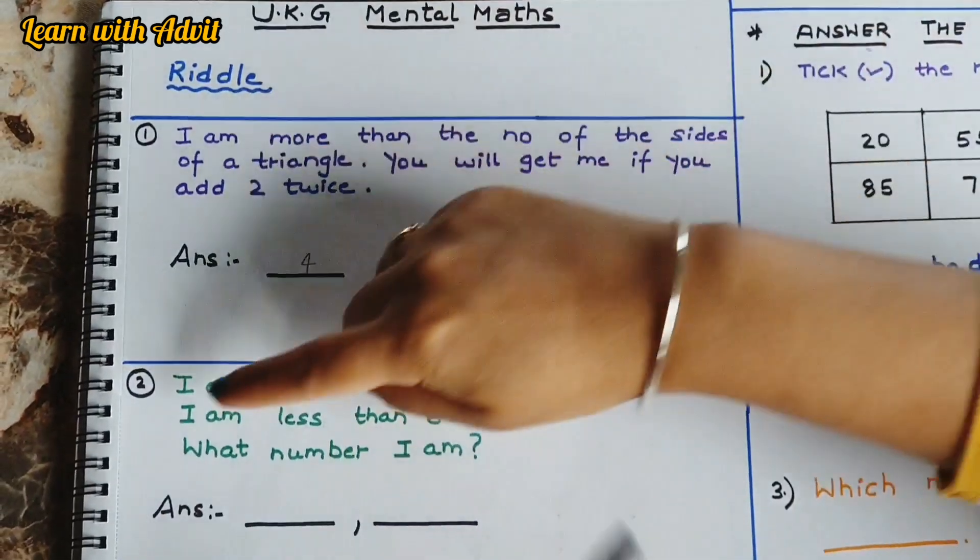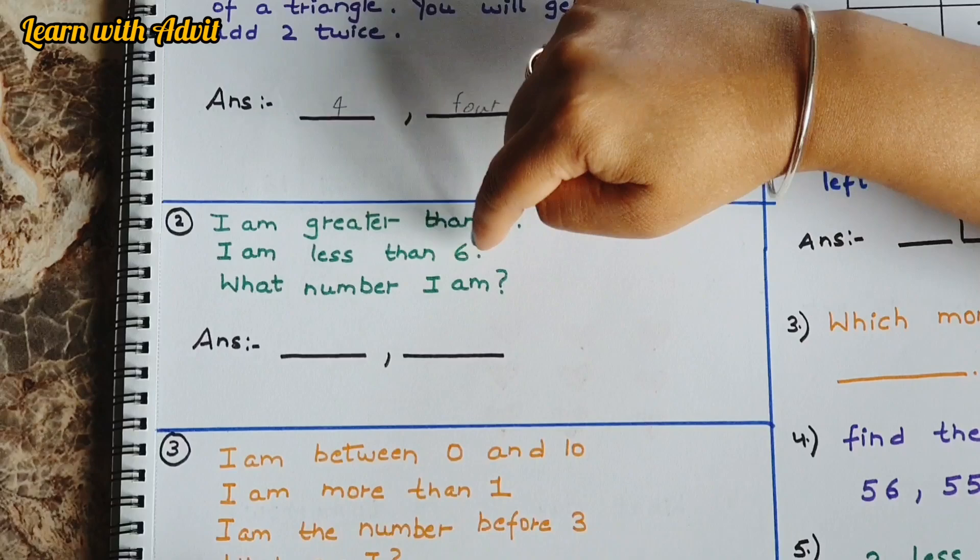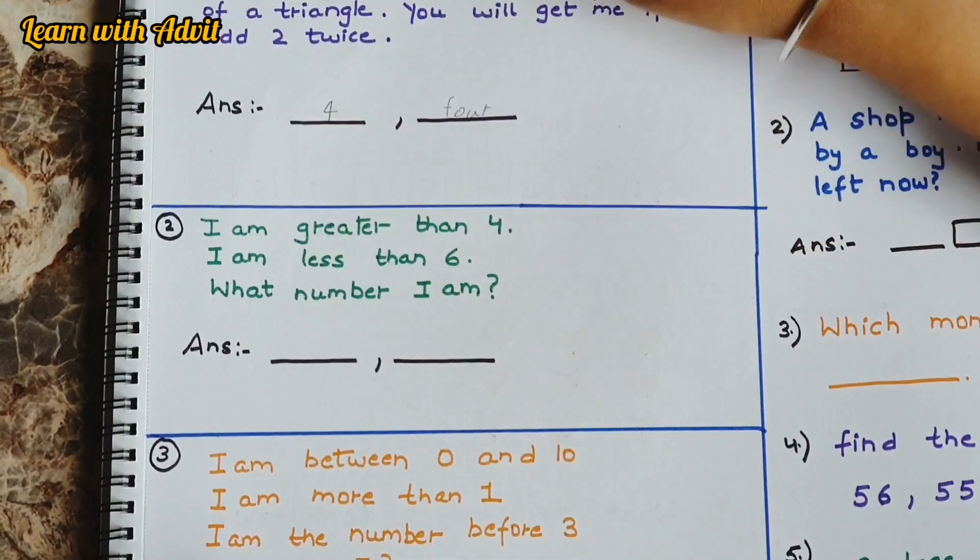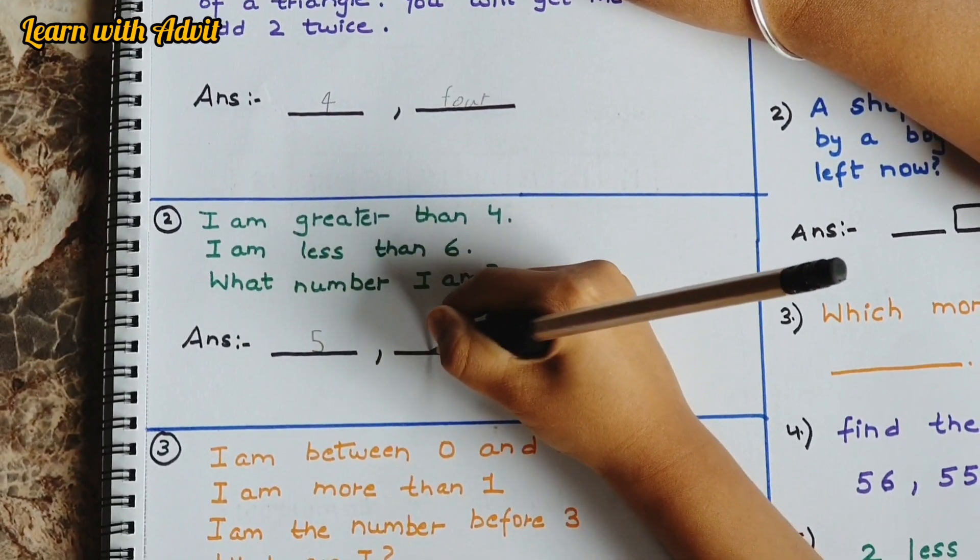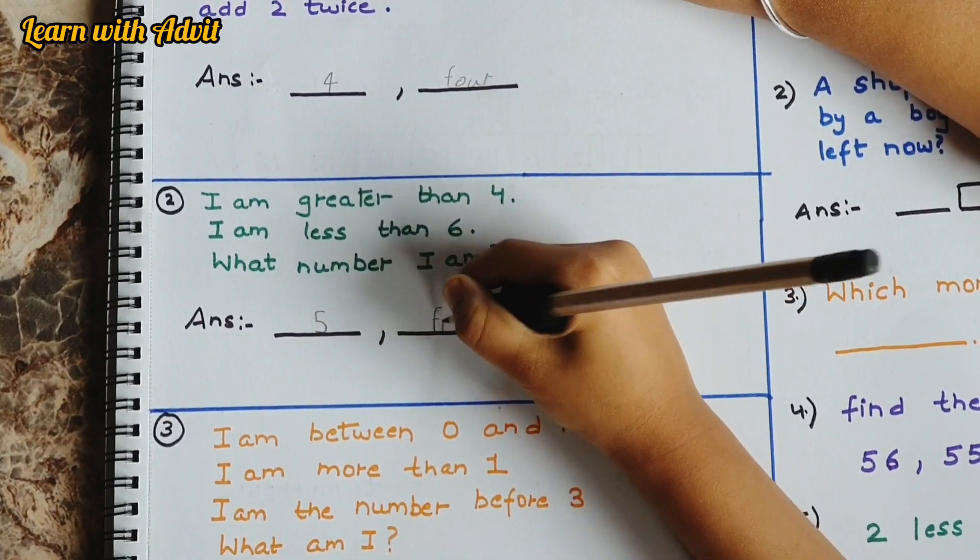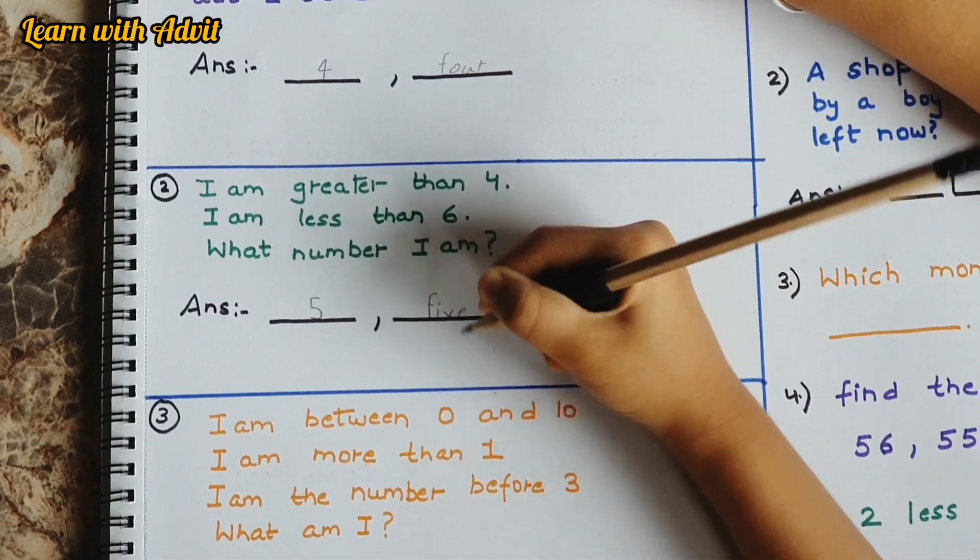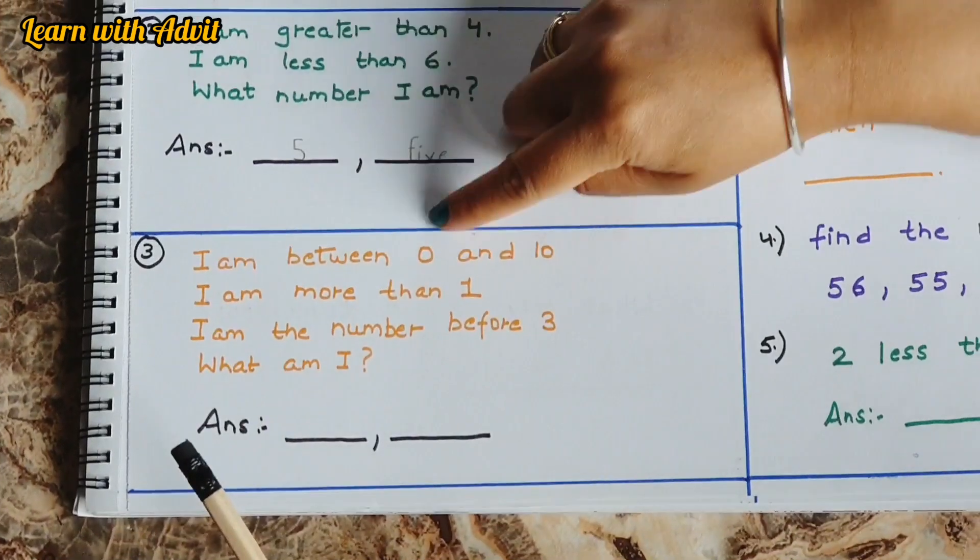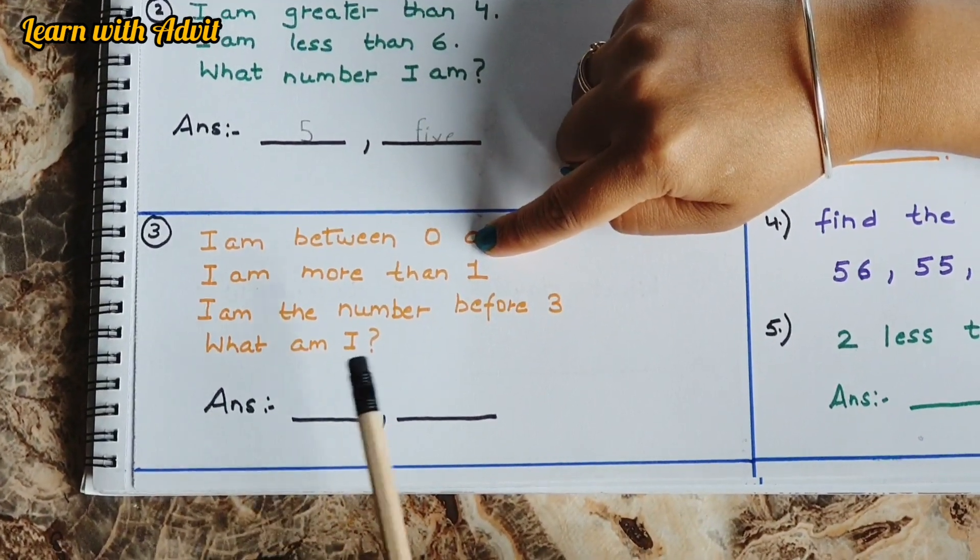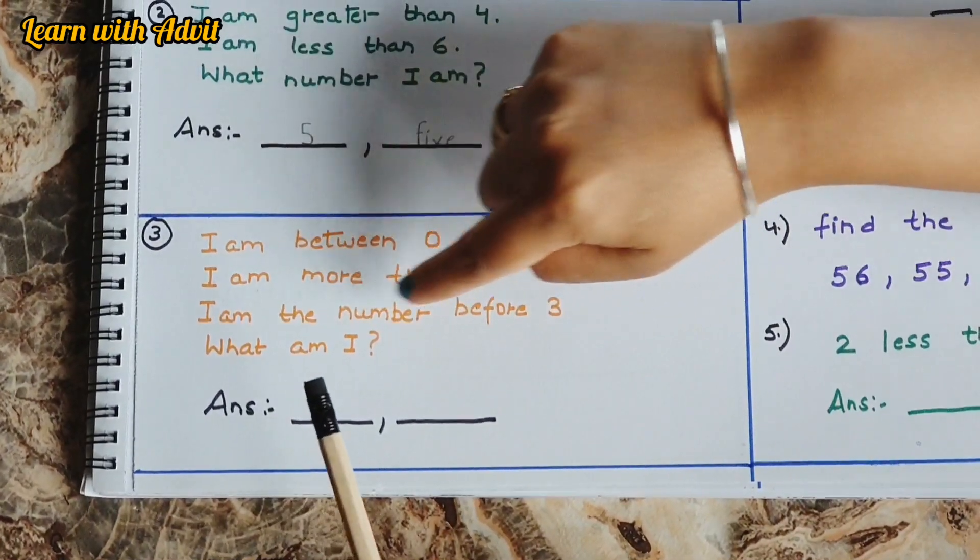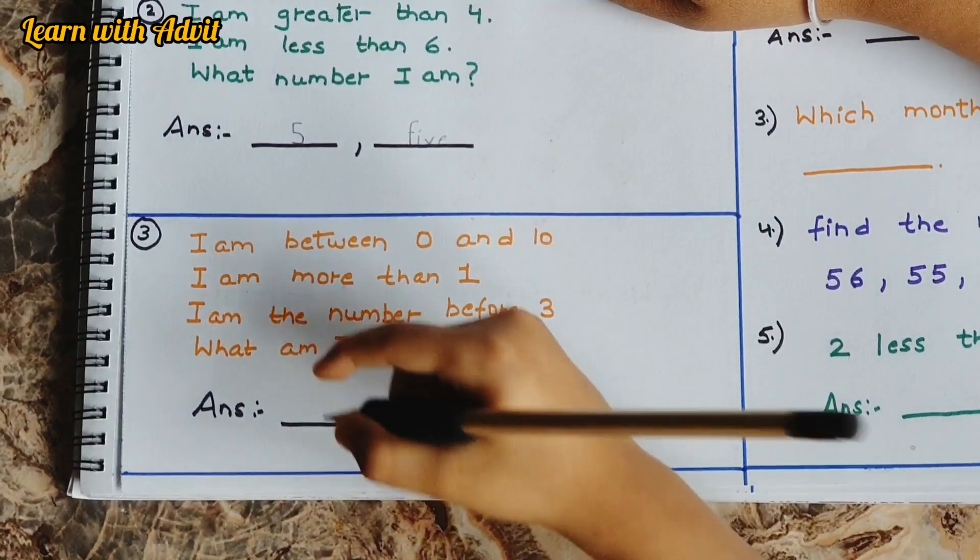I am greater than four. I am less than six. What number am I? Five. I am between zero and ten. The number is between zero and ten. I am more than one. The number is greater than one. I am the number before three. What am I? Two. Very good.